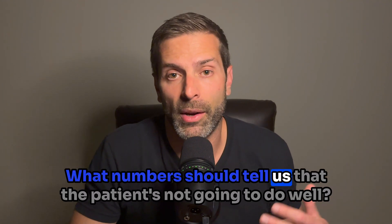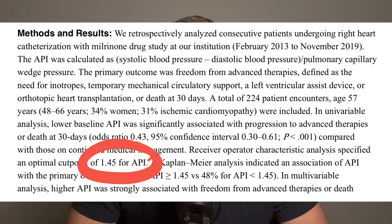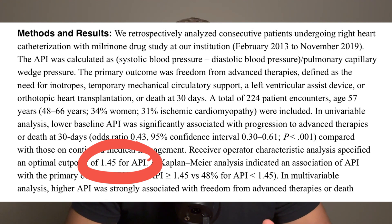After statistical analysis, the question is what cutoff should be used — systolic minus diastolic over pulmonary capillary wedge pressure — to tell us a patient isn't going to do well. Based on the Belkin data, for cardiogenic shock, a cutoff of 1.45 was identified. If API is greater than 1.45, the patient's chance of doing well — defined as freedom from advanced therapies or death — was 79%. If API was less than 1.45, that number dropped to just 40% at 30 days.